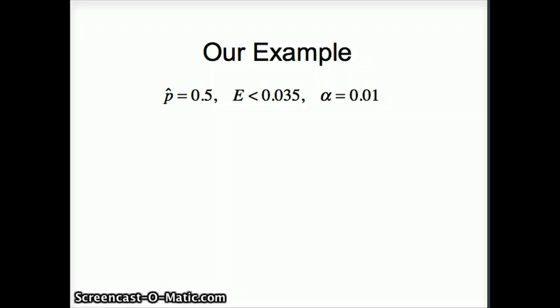So here's our example. P-hat is 0.5, we would like our margin of error to be about 0.035, a little bit less would be nice. Alpha is 0.05, and we have to find alpha divided by 2 or 0.01 divided by 2, which is 0.005. And we need to find Z sub 0.005 and we'll do that with Minitab.